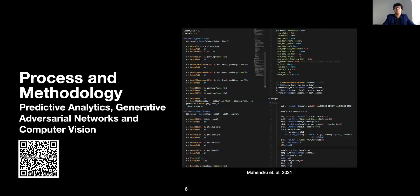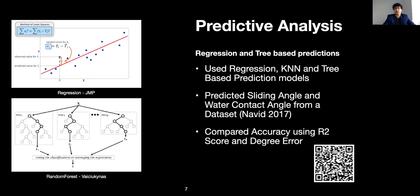Now, on to the process and methodology of actual predictions. We use predictive analytics, GANs, and computer vision. We used two types of predictive analytic models, basically regression and tree-based. We used numerous different models and decided on one, namely XGBoost, to give us satisfactory answers. And we compared accuracy using R2 score and degree error.